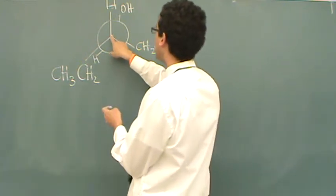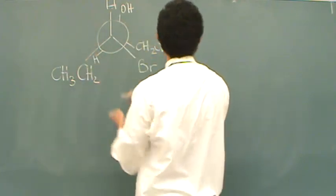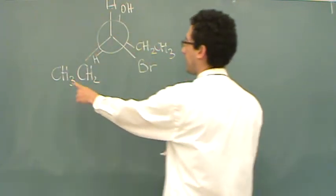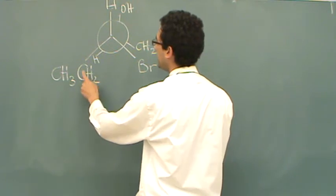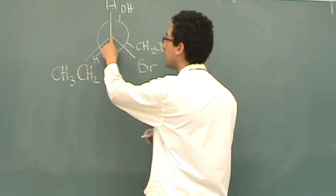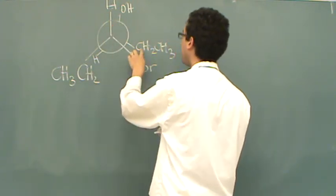So again, if you know your Newman projection, this is the front carbon and the back carbon represented by a circle. So we have the longest chain looks like it's 1, 2, 3. This is a carbon. The circle is a carbon. 4, 5, 6.